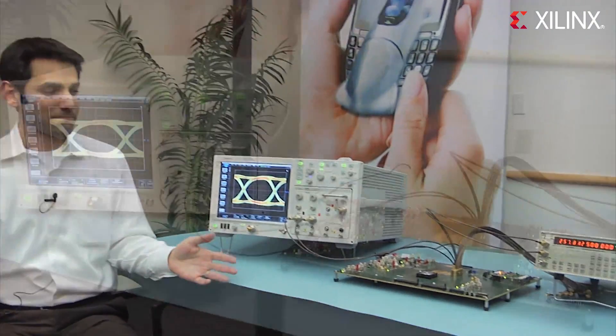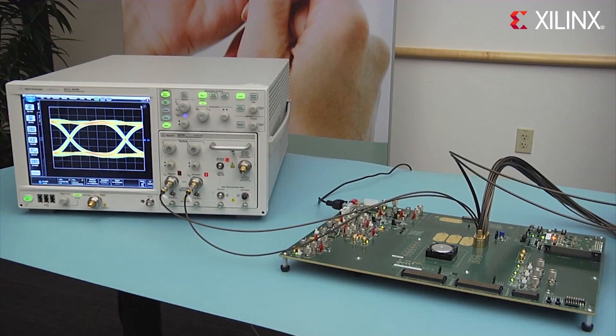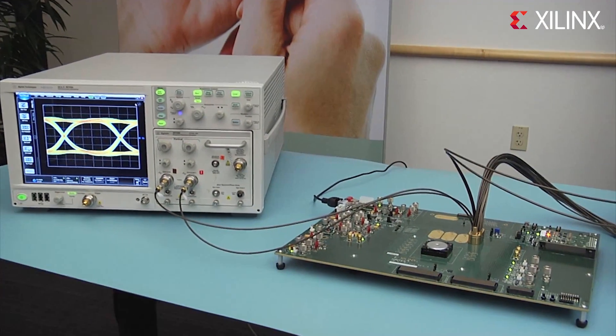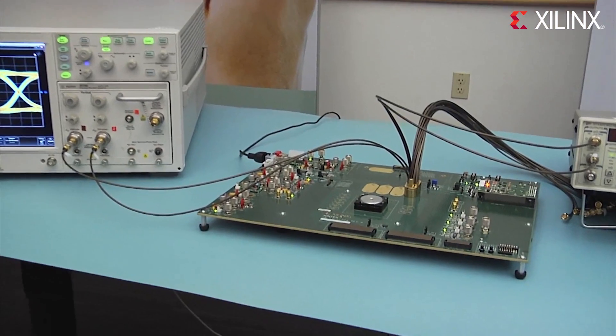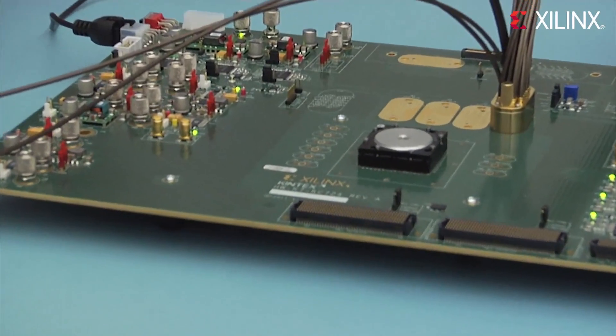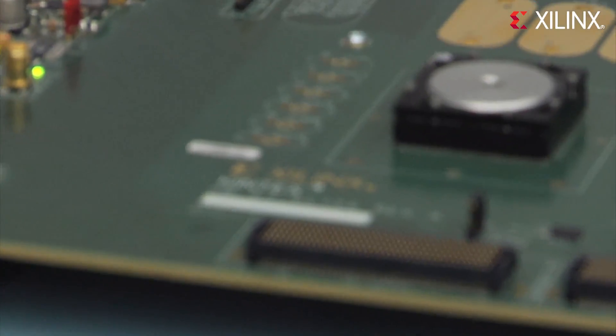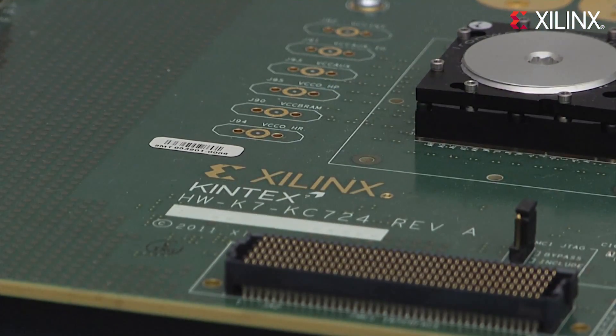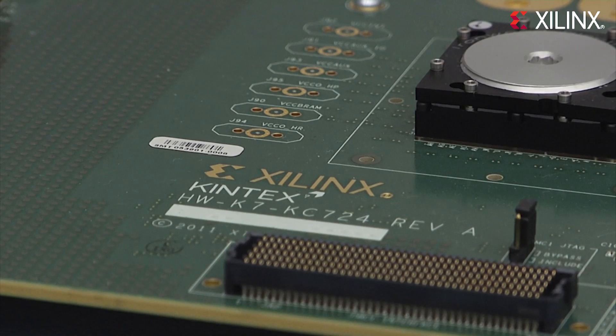There are several demos here, but what I'm going to show you today is the Kintec 7 transceiver in operation. The demonstration is running on the Kintec 7 K325T device, mounted in a socket on the KC724 transceiver characterization board. We use this characterization board for internal work and also provide it to our customers for Kintec 7 transceiver evaluation.